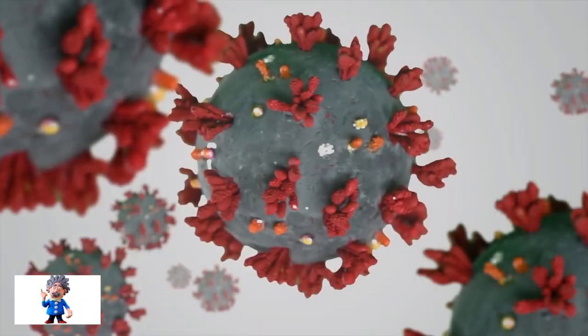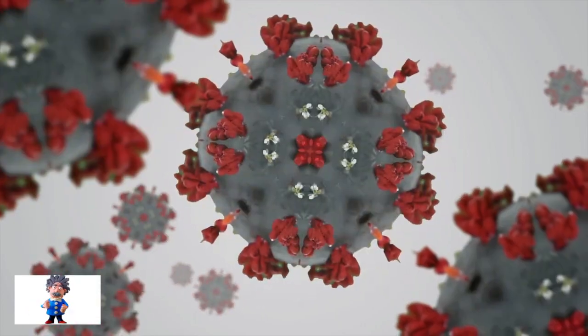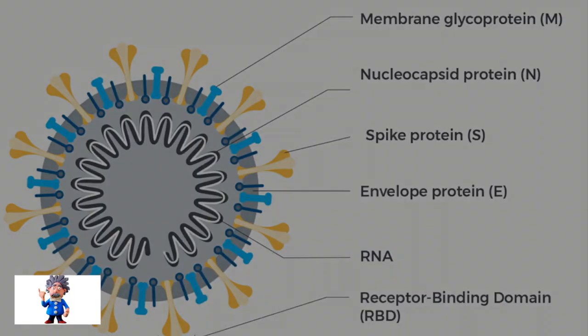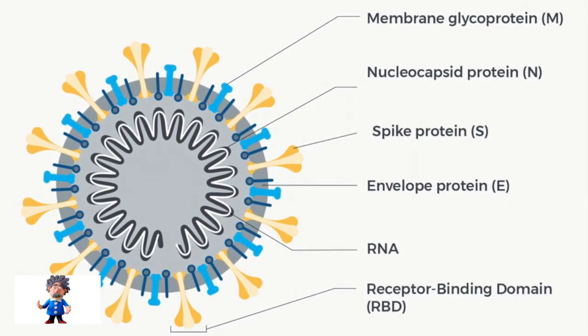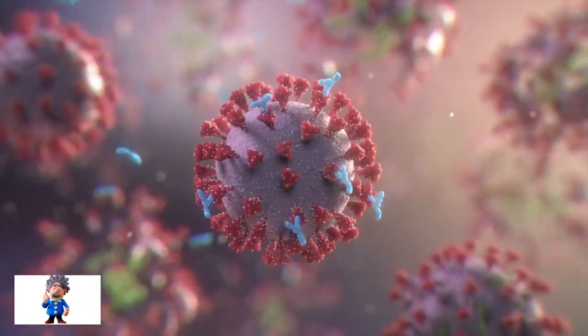It is important to remember that most of these mutations are actually found on the receptor binding domain of the spike protein. This is the very same place where the antibodies generated by the vaccines attached to.